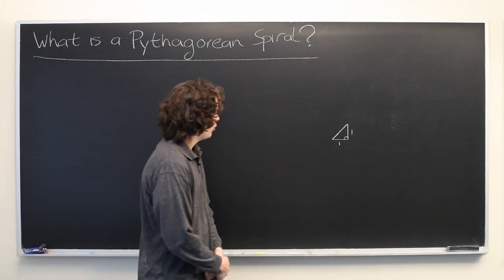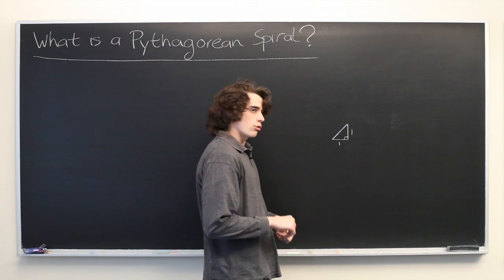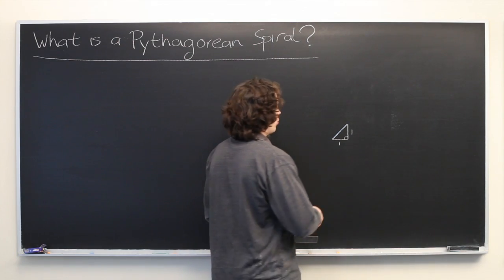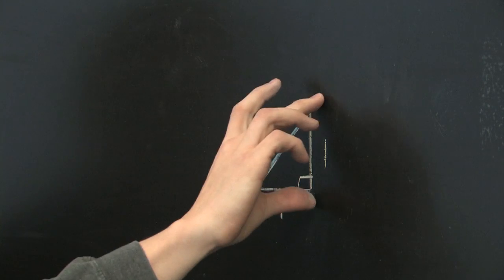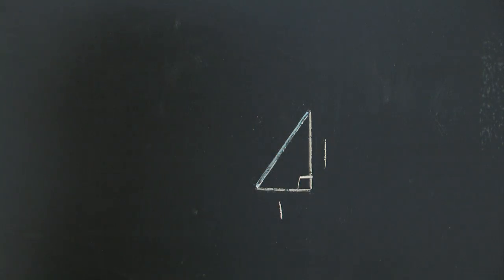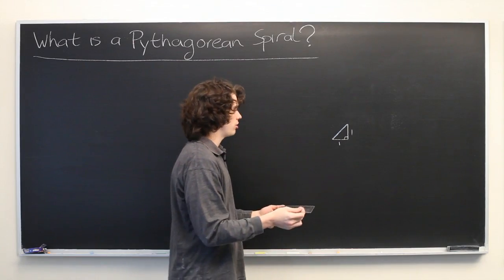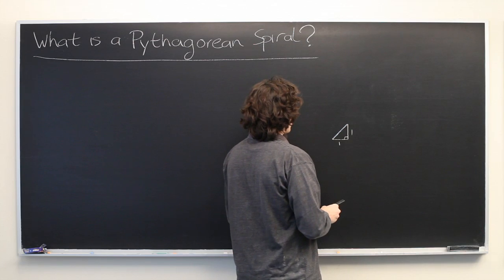A Pythagorean spiral is a very interesting shape. In order to construct it, we must first start with a right isosceles triangle in which both of the legs have the length of one unit. It could be any unit you want - inches, centimeters - as long as it's consistent.